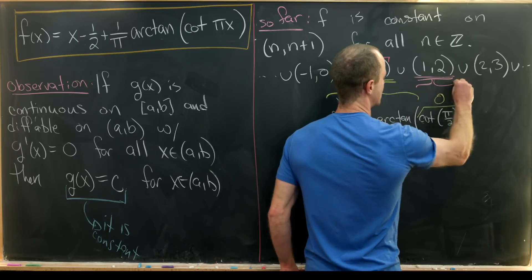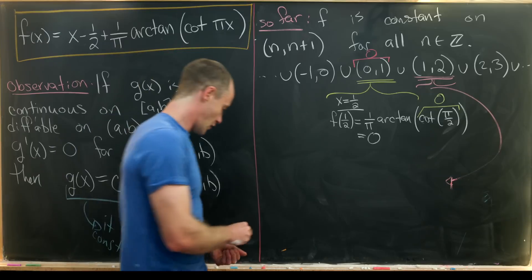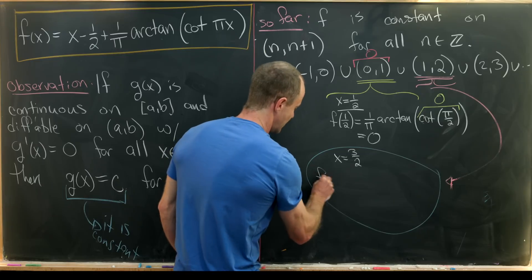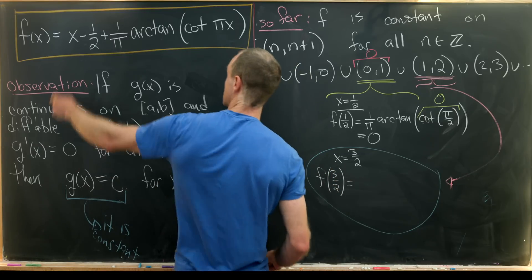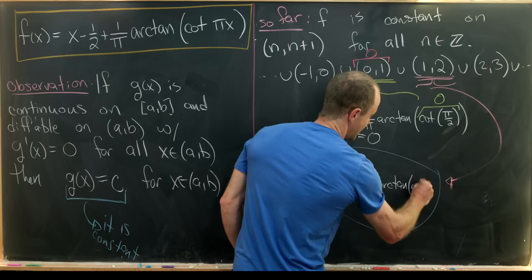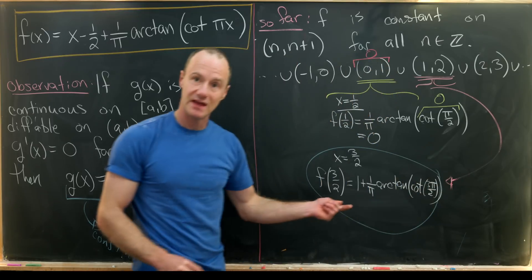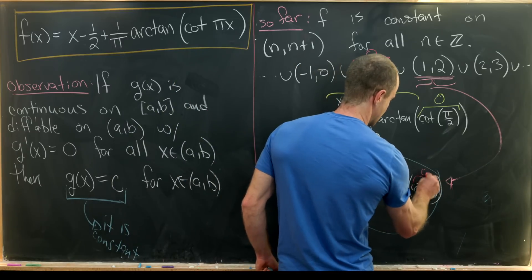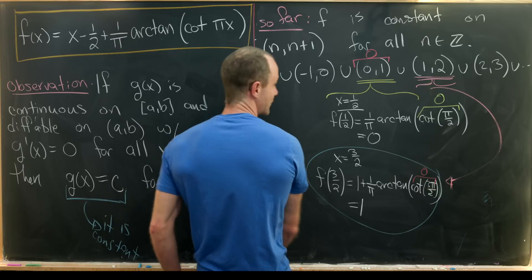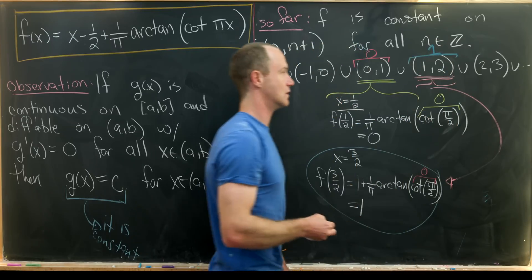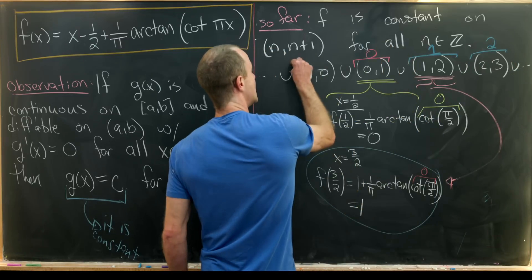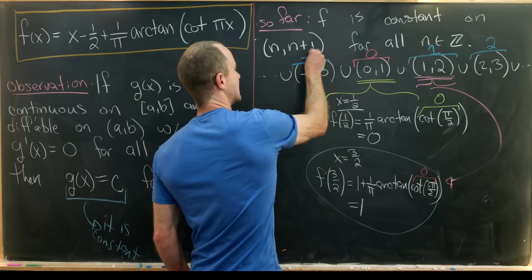Between 1 and 2, let's take x equal to three halves. Then f(3/2) equals 3/2 minus 1/2 plus one over pi times arctan of cot(3π/2). The cotangent of 3π/2 is also zero, arctan of zero is zero, so we get 1 plus 0, which equals 1. So the function equals 1 on the entire interval (1, 2). We can start to see a pattern: the function equals 2 on (2,3), negative 1 on (-1, 0), and so on.